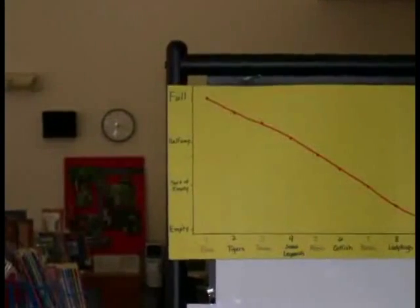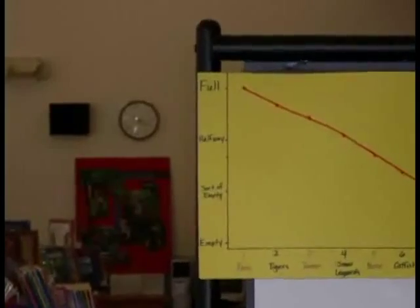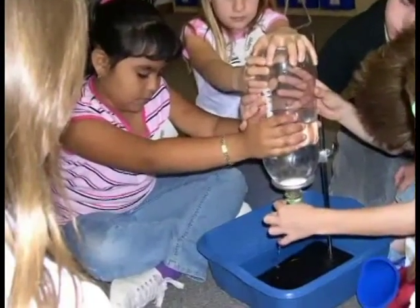The behavior over time graph was showing how the water was getting lower and lower. We were letting the water go which represented the animals drinking.